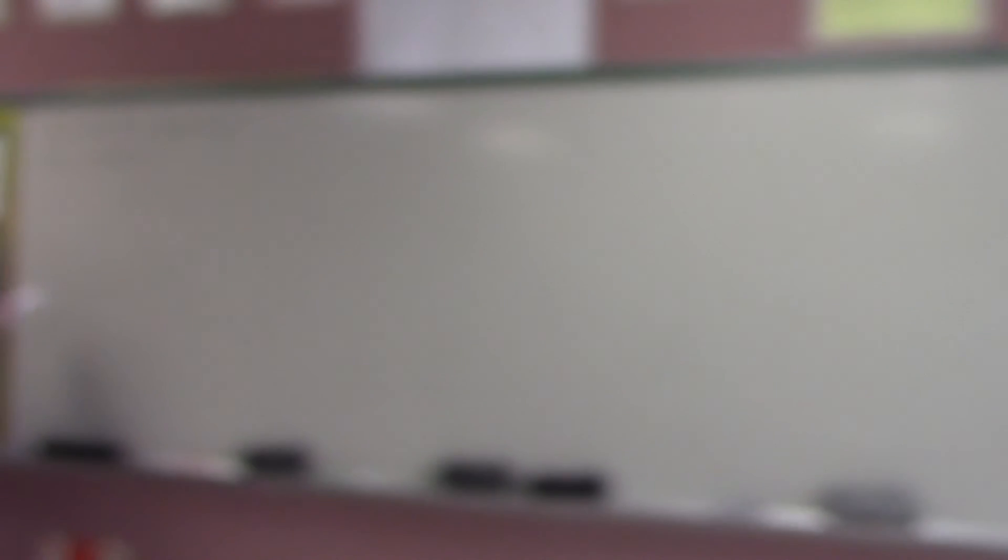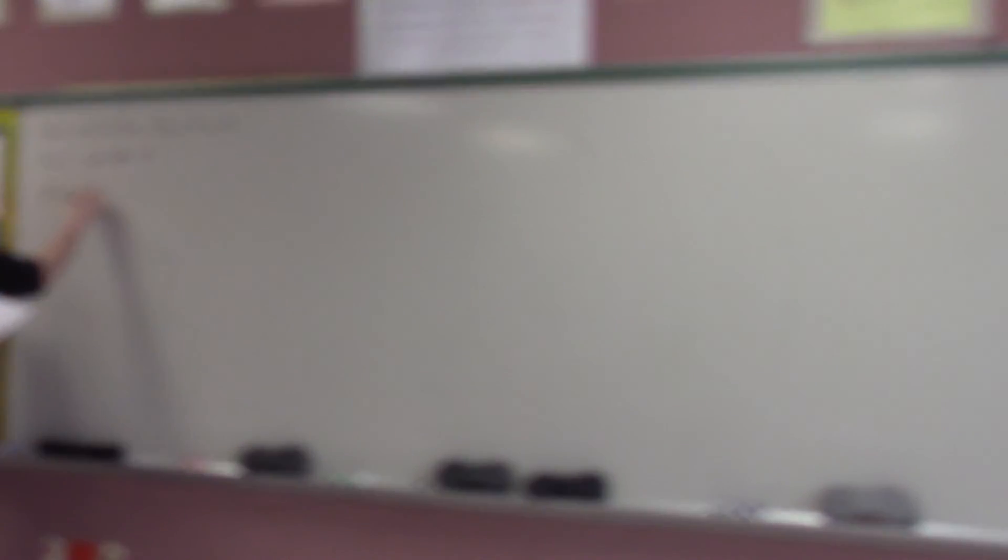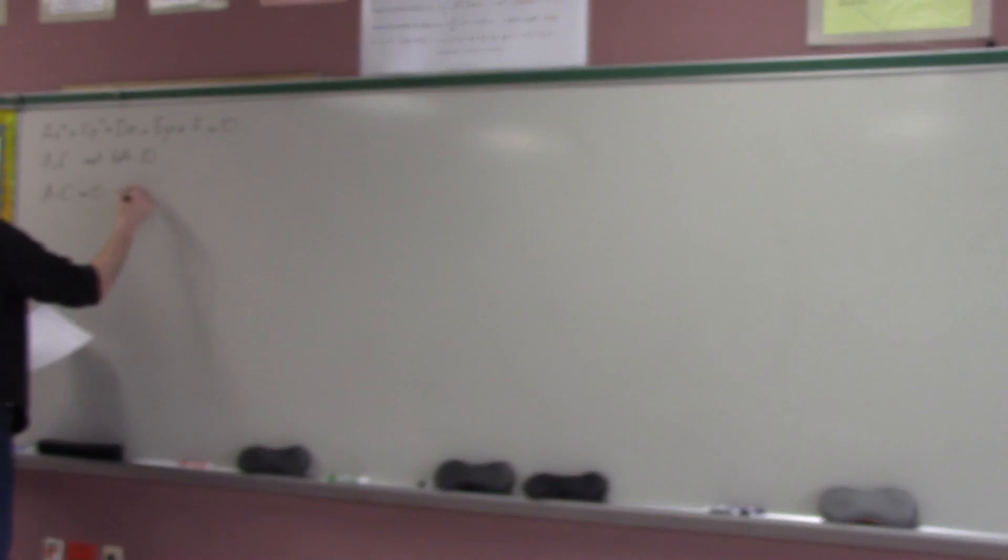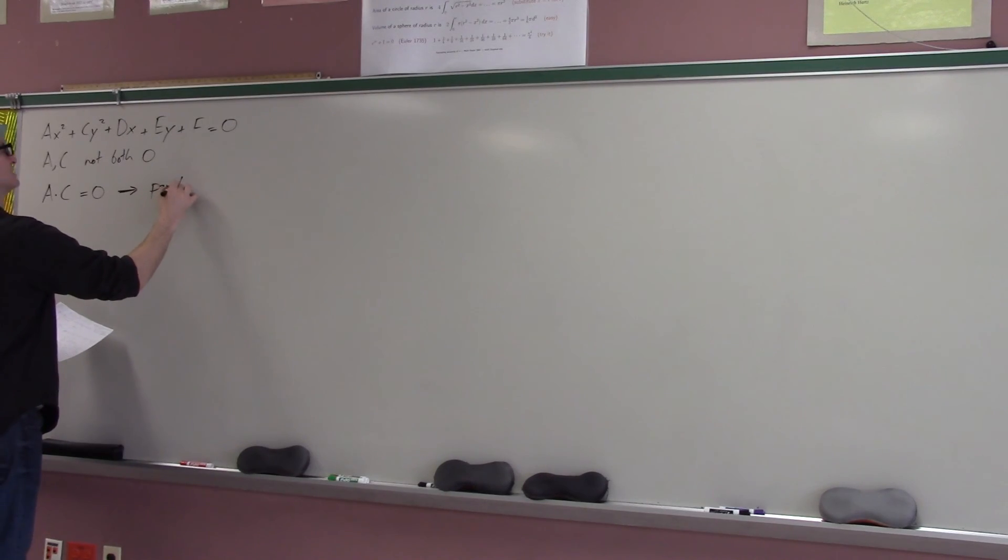Because if a and c are both zero, then it's just a line, which I suppose that is a conic, but let's just for the moment suppose that a and c are not both zero. Well, if a and c are not both zero, and a times c is zero, then that's just kind of like another way of saying that either a is zero or c is zero, but not both. And if that's true, we have seen that this is guaranteed to be a parabola.